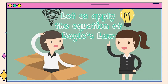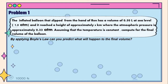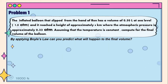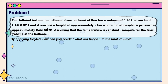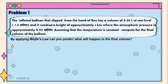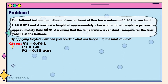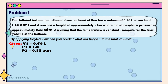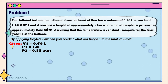Now, let us apply the equation of Boyle's Law. Problem number one: the inflated balloon that slipped from the hand of Ren has a volume of 0.5 liter at sea level, that is 1 atmosphere, and it reaches a height of approximately 8 km, where the atmospheric pressure is approximately 0.33 atmosphere. Assuming that the temperature is constant, compute for the final volume of the balloon. The initial volume is 0.5 liter, the initial pressure is 1 atmosphere, and the final pressure is 0.33 atmosphere.